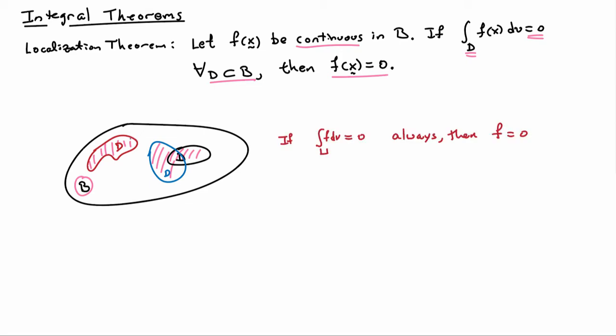So if my integral over any d subset of b is always equal to zero then my conclusion is that the function is equal to zero. So it's kind of a peculiar theorem but if you think about it it kind of makes sense.